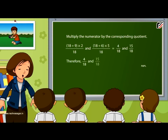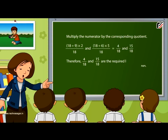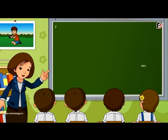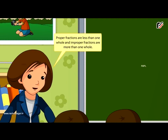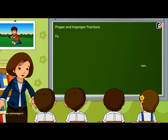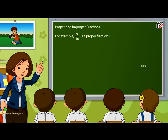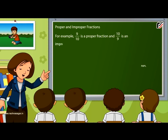Therefore, 4 by 18 and 15 by 18 are the required like fractions. Proper fractions are less than 1 whole and improper fractions are more than 1 whole. For example, 9 by 10 is a proper fraction and 10 by 9 is an improper fraction.